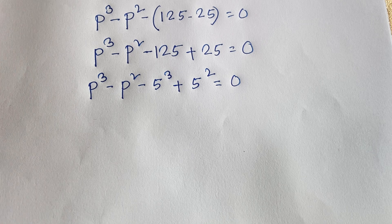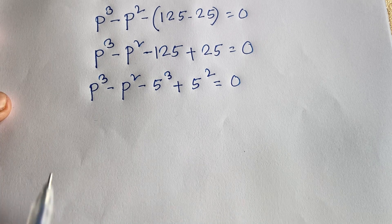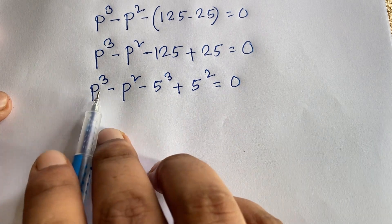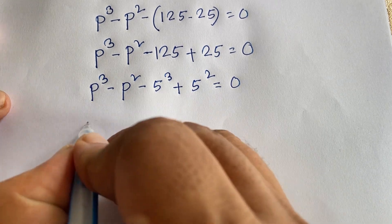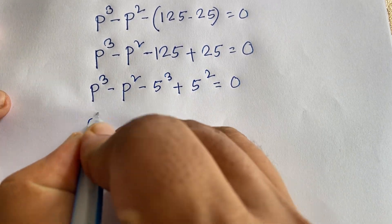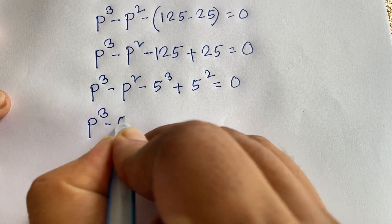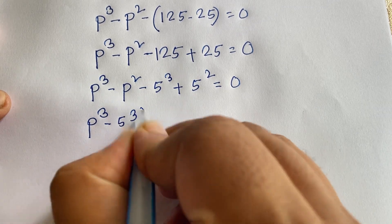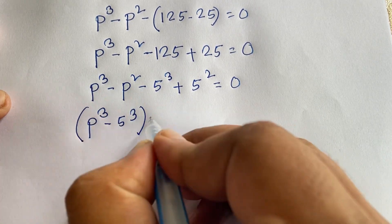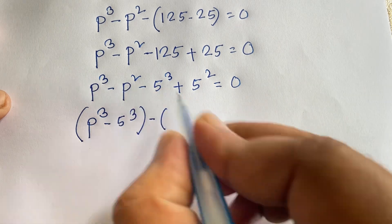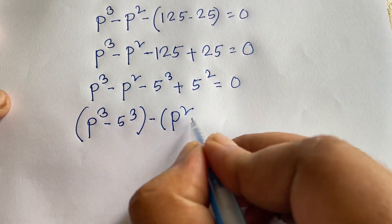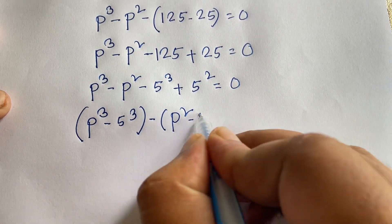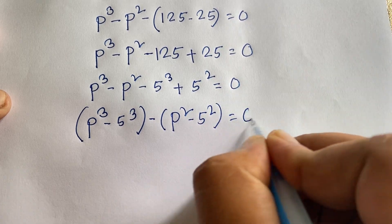Now, at this moment, I can say: look, here is P to the power 3 and here is 5 to the power 3. So here is P to the power 3 minus 5 to the power 3, in a bracket. And here is minus P squared minus 5 squared, which gives us plus — it will be minus 5 squared — equal to 0.